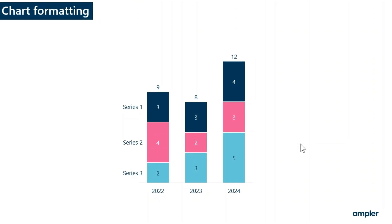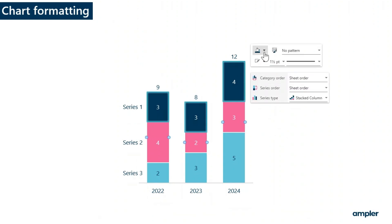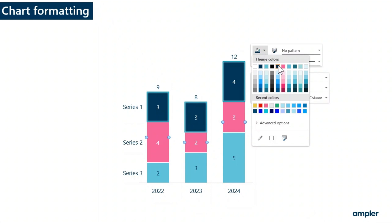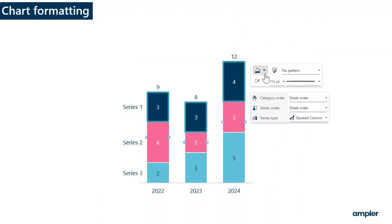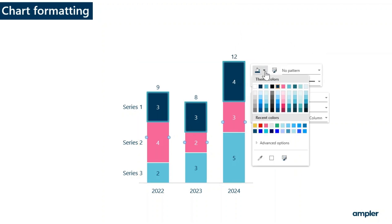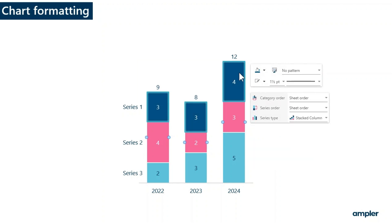Charts automatically pick up the formatting of the PowerPoint template. This means that the body font and colors are applied and automatically adjusted to make all labels visible. The coloring logic matches the coloring logic of PowerPoint — accent one will be applied to series one, accent two will be applied to series two, and so on. Font color and segment colors can be changed from the format menu. Simply select the desired color from the color picker, and the segments will update automatically.